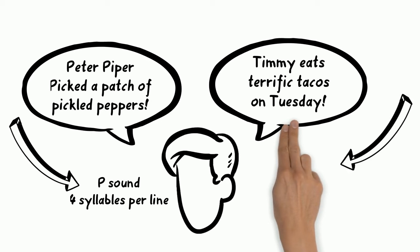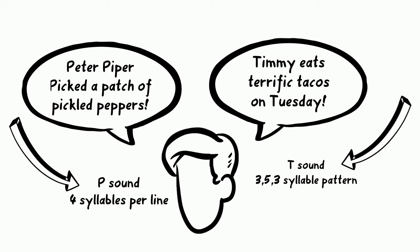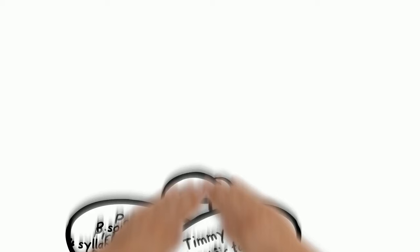In these two rhymes or poems, we see consonant sounds repeated, the letter P and the letter T. This adds to the rhythm and beat of the poems.